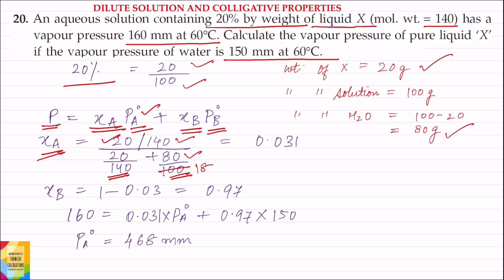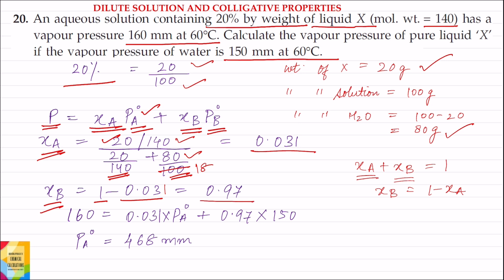Solving, the mole fraction of liquid X, X_A, equals 0.031. For binary solutions, X_A plus X_B equals 1, therefore X_B equals 1 minus X_A. Since X_A is 0.031, X_B is approximately equal to 0.97.